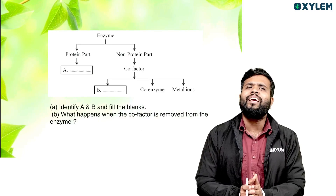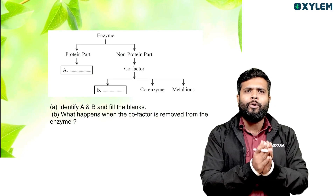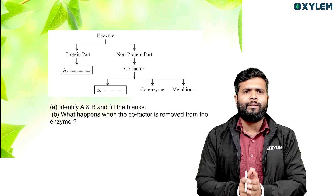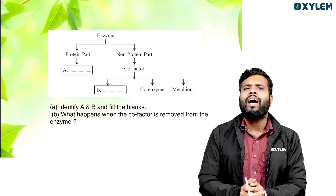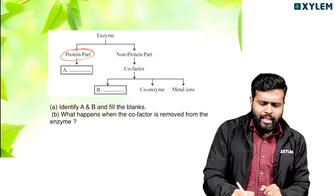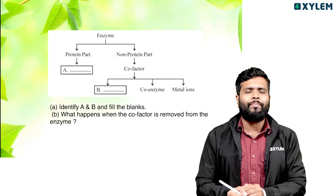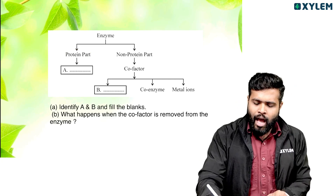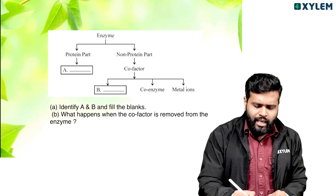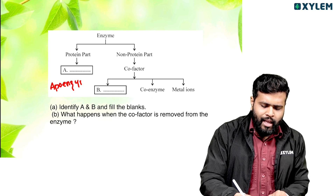We have classified enzymes into two parts: a protein part and a non-protein part. The question is to identify A and B. A is the protein part, which we have called the Apo-enzyme. The first answer is Apo-enzyme.